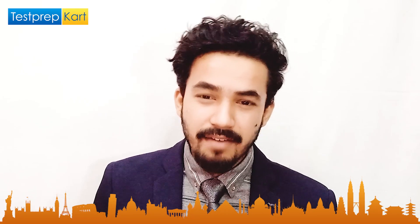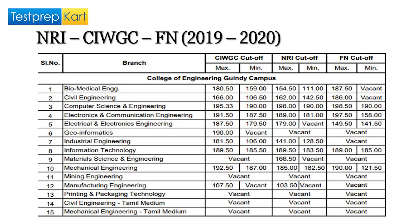Let's start with NRI — specifically the NRI CIWGC and Foreign National categories — based on last year's data, 2019 to 2020. I took a top college from Anna University, which is the College of Engineering at the Guindy campus. Out of 200, for the CIWGC category, the maximum cutoff was 180.5 and the minimum was 159. Cutoffs come in rounds based on the number of applicants.